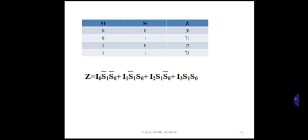This is the truth table of the multiplexer. When s1 and s0 are both 00, z equals whatever i0 is. When s1 and s0 are 01, z is i1. For 10, z is i2, and for 11, z is i3. That means the output is just one particular input, and that particular input is routed to the output.